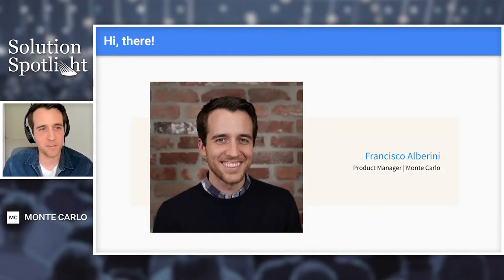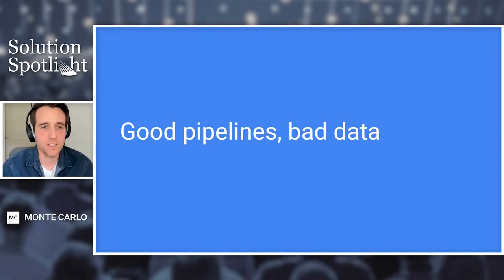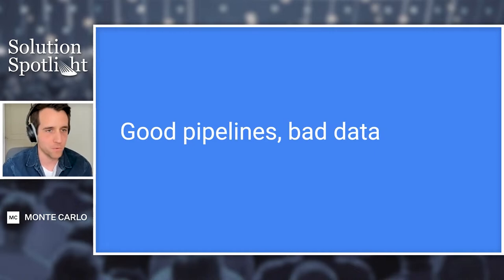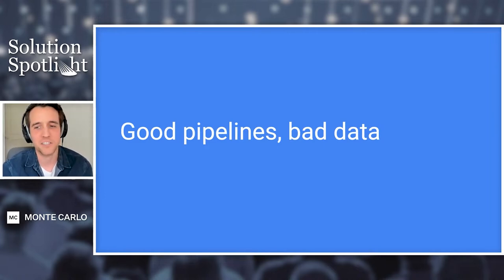I'm a PM here at Monte Carlo, been with the company for two and a half years and have worked across the products. This concept of good pipelines, bad data — data engineers are building really strong, good tech to actually move data from point A to point B and process whatever needs to be done within that. But a lot of times, the data itself can break. There's a lot of different reasons why data can break. Yes, every once in a while the pipeline itself breaks — the underlying technology — but in a lot of ways, it's the underlying data that breaks. And we'll talk about why that's important as we go through the presentation.